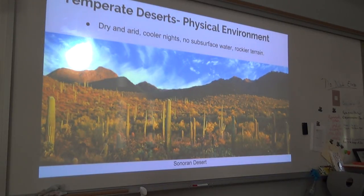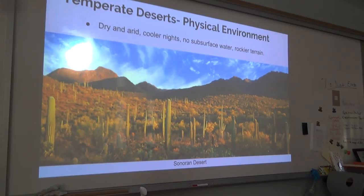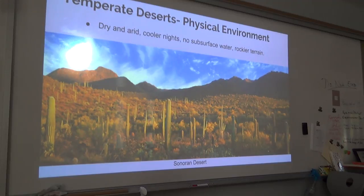The physical environment is very dry and arid due to the lack of rainfall, so there's not a lot of moisture in the air and soil. Cooler nights reduce the amount of moisture loss from transpiration. There's not much subsurface water because any excess water goes to the plants. Because of the rockier terrain compared to other deserts, soil can range from fragmented rock to sandy.